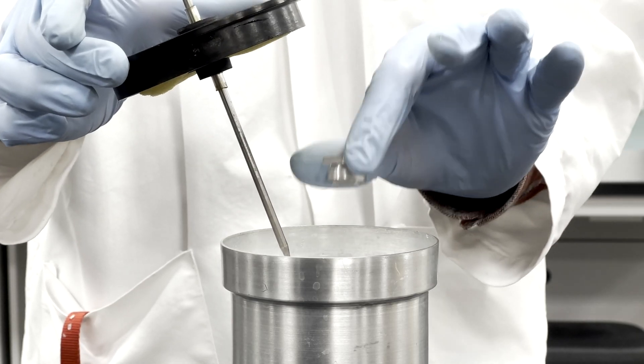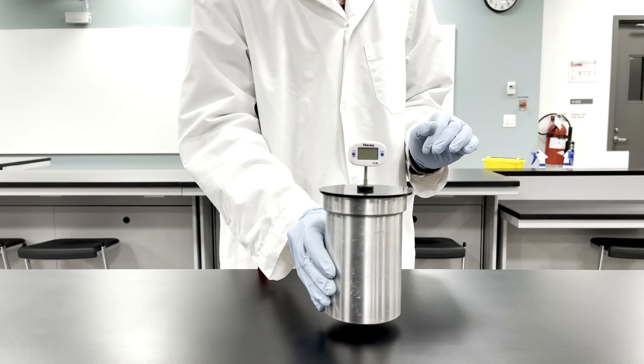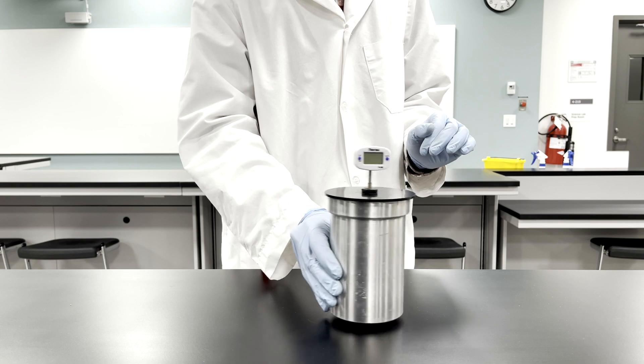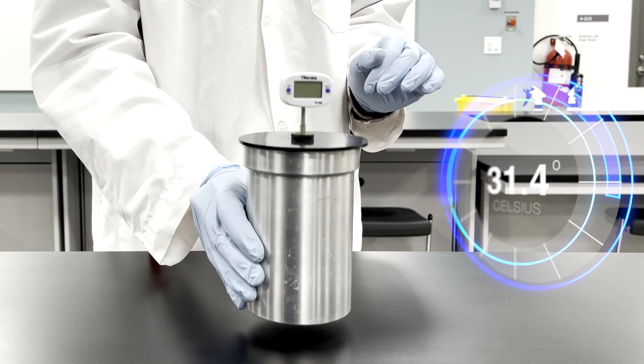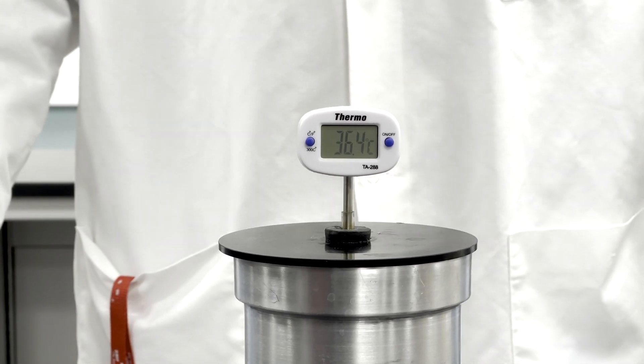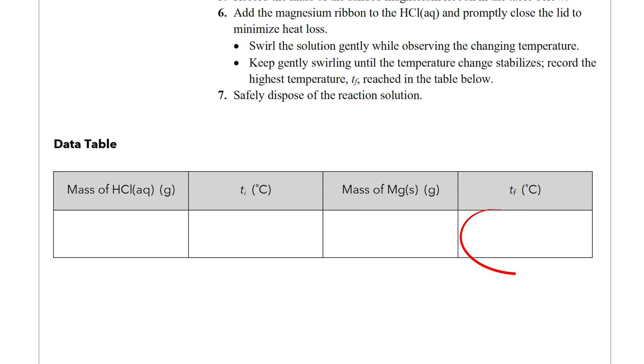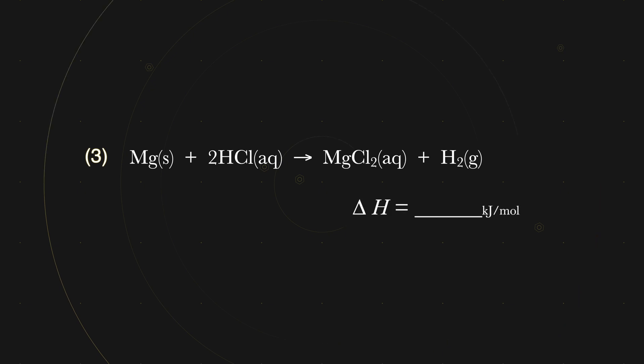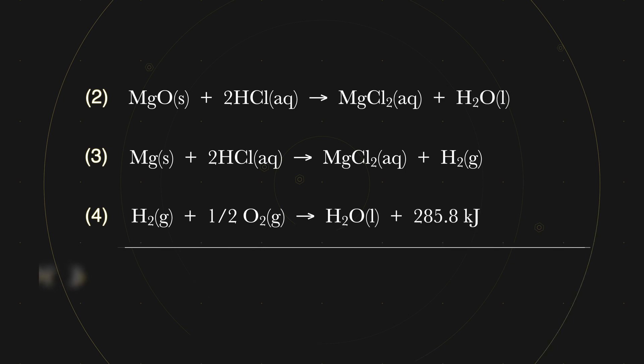Add the magnesium ribbon to the acid in the calorimeter. Again, the solution is gently swirled to encourage the reaction. As the reaction progresses, the temperature once again changes, and we wait until it stabilizes before recording the highest temperature as the final temperature in the data table. Once you calculate the enthalpy change for this reaction, you will be able to use Hess's law to combine all three thermochemical equations to determine the molar enthalpy of formation of magnesium oxide.